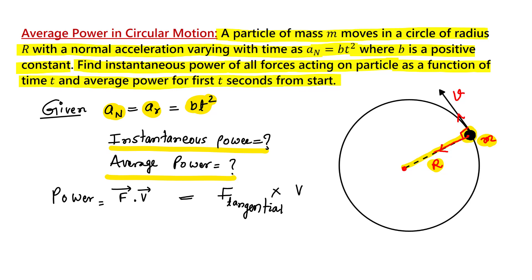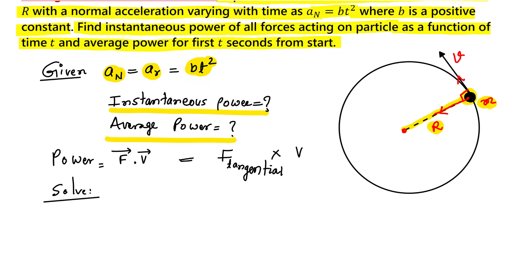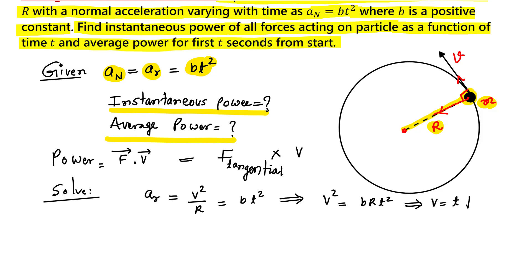Let us solve this problem. We have radial acceleration equal to v squared over r, which is given as bt squared. From here, v squared equals brt squared, so v equals t times the square root of br. Now I want to calculate the force in the tangential direction, so I differentiate v with respect to t, giving tangential acceleration equal to the square root of br.